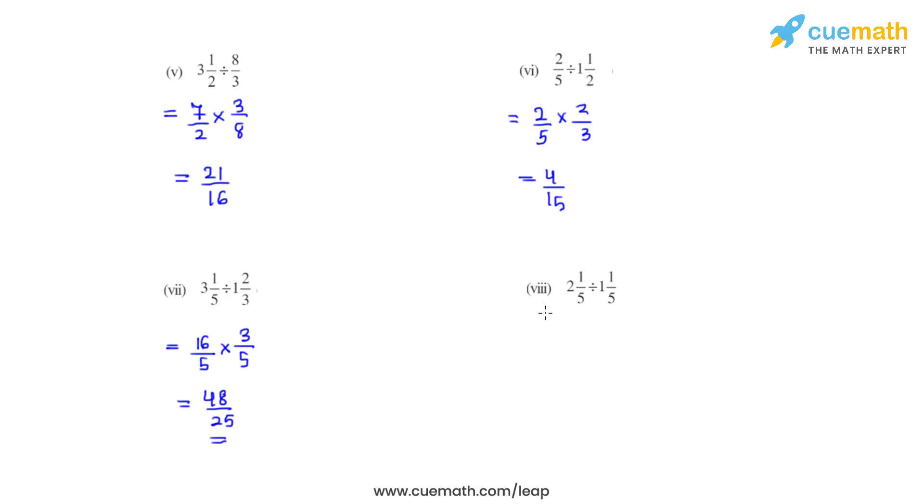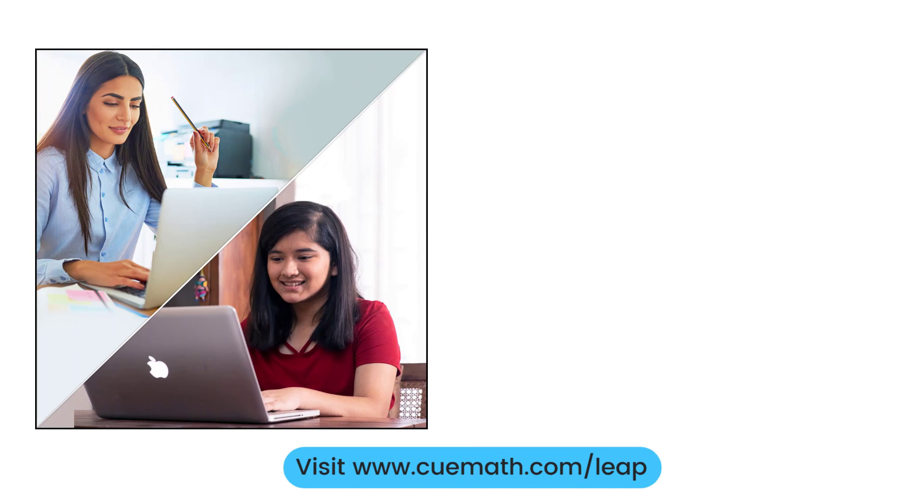Now coming to the last bit of this question, which is the 8th bit, we have 2 1/5, that in improper fraction is 11/5, divided by 1 1/5. Improper fraction of 1 1/5 is 6/5, and its reciprocal would then be 5/6. So 5 and 5 gets cancelled, and we are left with 11/6. And this is how we solve this problem.